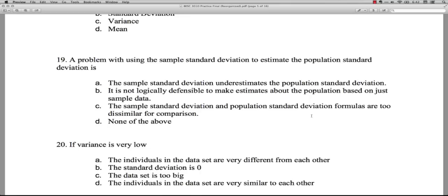Now, here we have this one. B, it is not logically defensible to make estimates about the population based on just sample data. Well, that's not true, because that's what inferential statistics is all about, using samples to make inferences about population. So B is not correct. C, the sample standard deviation and population standard deviation formulas are too dissimilar for comparison. That's ridiculous. The only way they differ is by the denominator, N versus N minus one. It's a small difference. And with a large sample, it's practically negligible. D, none of the above. No. A is the correct answer on 19.